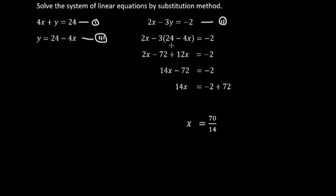Substituting into equation 2: 2x minus 3 times (24 minus 4x). We expand: 3 times 24 equals 72, and 3 times 4x equals 12x.